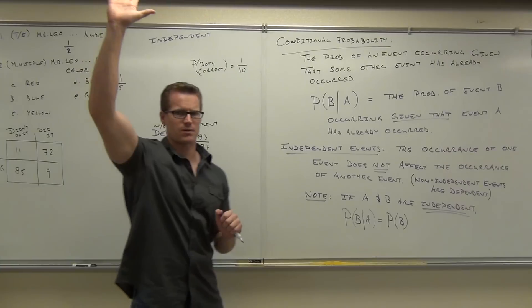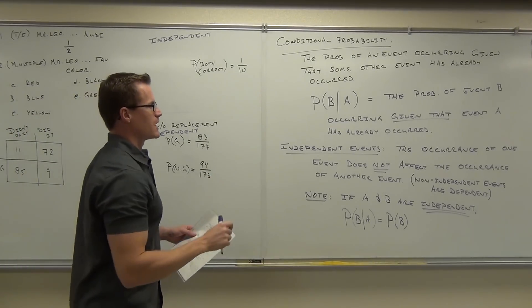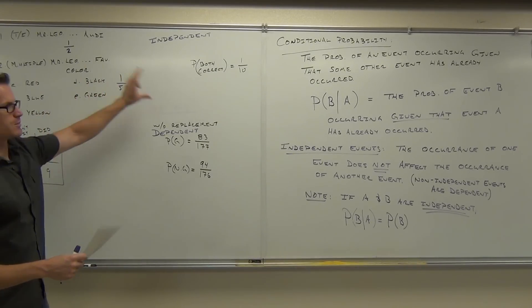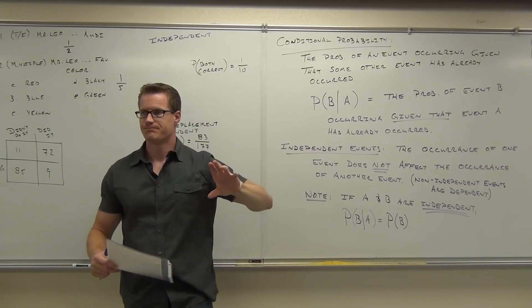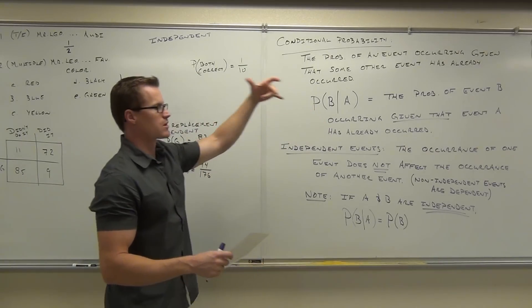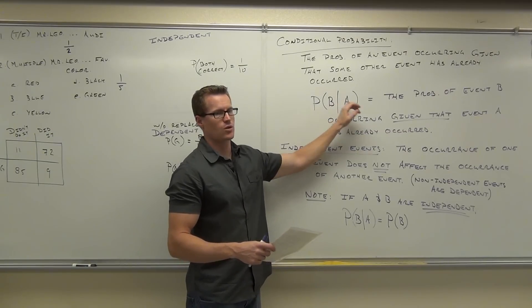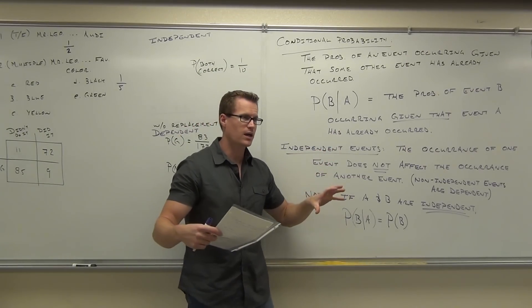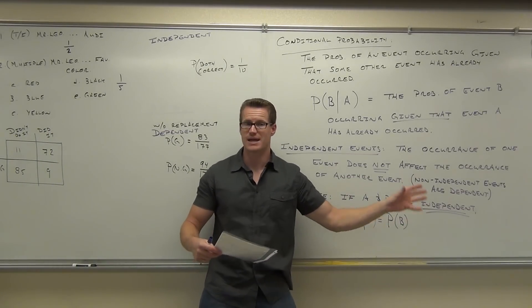Conditional probability simply means the probability of one event occurring given that some other event has already happened. This is written as P(B|A), meaning the probability of B occurring given A has already happened. If they're independent — not related in any way, if one does not affect the other — then the probability of B given A is just the probability of B because A has no influence.